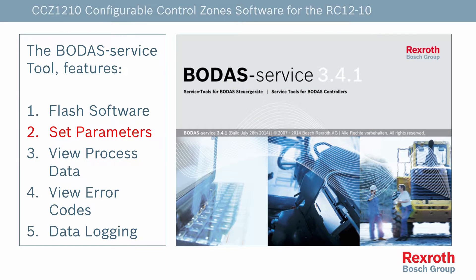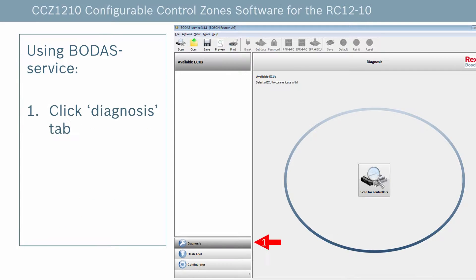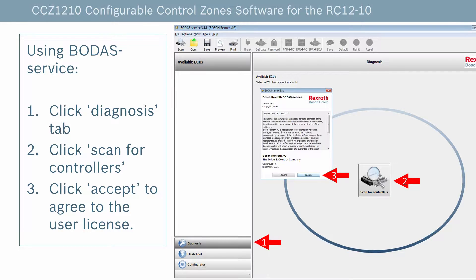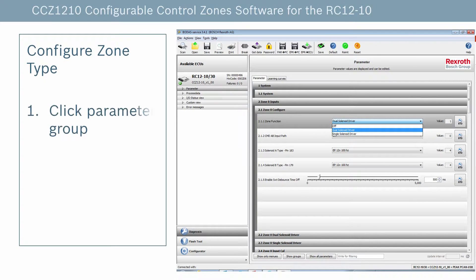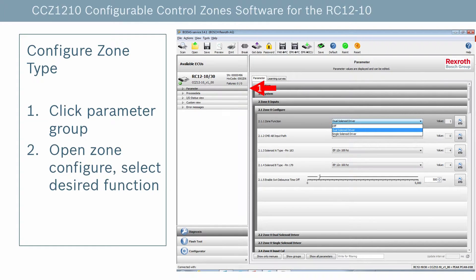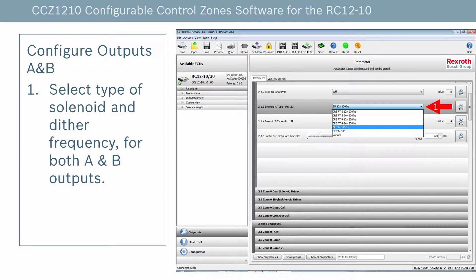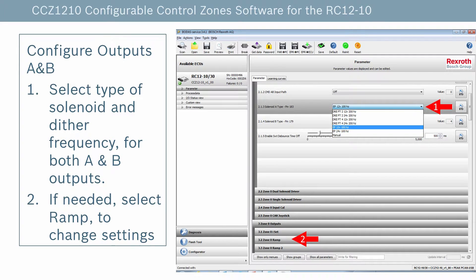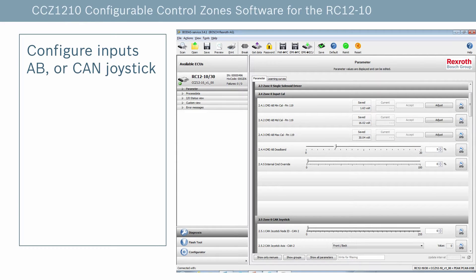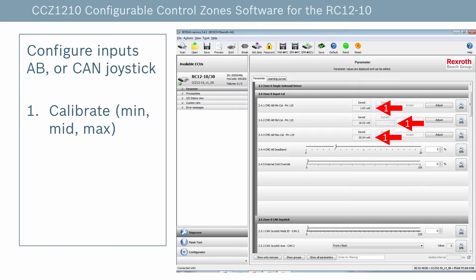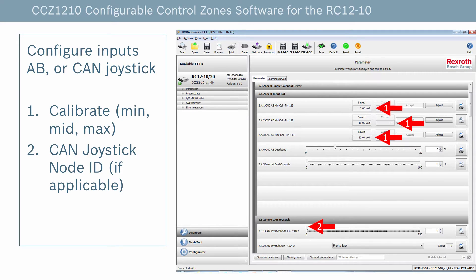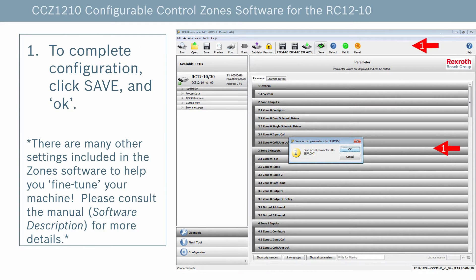To configure the zone parameters, we'll be using the Diagnosis portion of BODOS service. First, click the Diagnosis tab, then click the Scan for Controllers button in the middle of the screen, and click to accept the license agreement. Once the service tool is connected to the zone program, click Parameter, then click Zone Configure, and then select the desired function. Next, using the drop-downs, configure the solenoid types for both A and B outputs. If needed, select the zone ramp to adjust the faster or slower speed. Finally, if an analog input is being used, select Input Cal to calibrate the input. However, select CAN Joystick and set up the Node ID for a CAN Joystick input. At this point, you're ready to click the Save button at the top of your screen with the green checkmark, and the parameters will be saved to the controller.